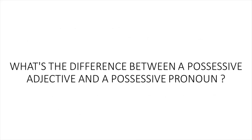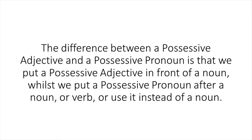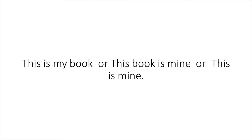What's the difference between a possessive adjective and a possessive pronoun? The difference is that we put a possessive adjective in front of a noun, whilst we put a possessive pronoun after a noun or verb, or use it instead of a noun. Give me an example, please. This is my book, or this book is mine, or this is mine.